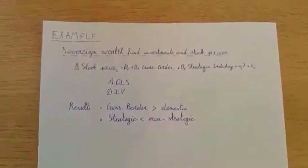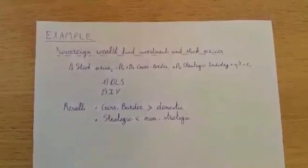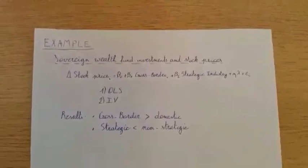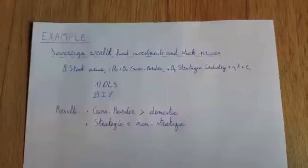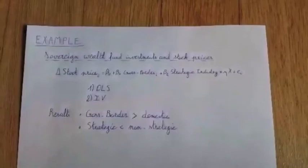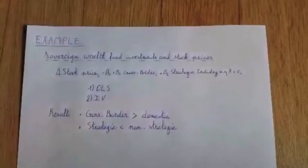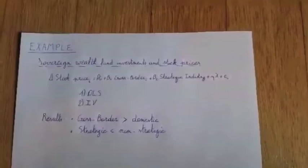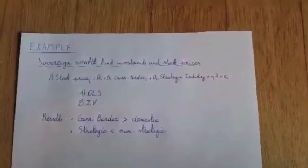Let's now switch to a more practical example about the sovereign wealth fund. In this work, they investigate the determinants of sovereign wealth fund, SWF, investment stock prices. They focus on the location of the investments and on the target industry. The methodology they use is given by the following equation. Delta stock price is the difference in the stock price of the target company i between two days. Cross-border is a dummy variable that equals one if the SWF and target country are not the same. Strategic industry is a dummy variable that equals one if the target company operates in a strategic industry. The vector x includes several control variables.